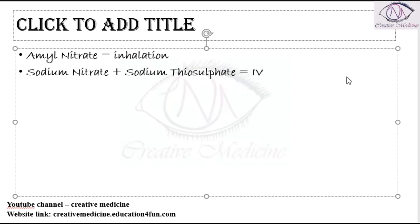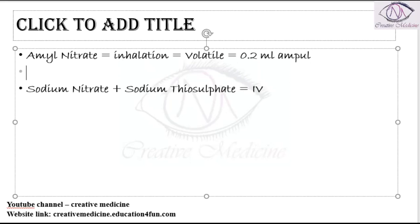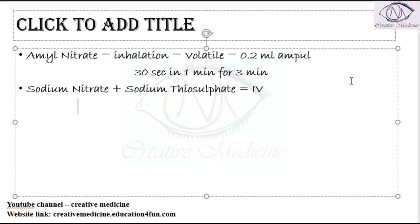Amyl nitrate is volatile. A 0.2 ml ampoule of amyl nitrate is broken and pulled over a gauze or kerchief, and the patient is asked to breathe it for 30 seconds every minute, for 3 minutes. A new ampoule is taken every 3 minutes and the patient continues to breathe until sodium nitrate and thiosulphate are infusing.